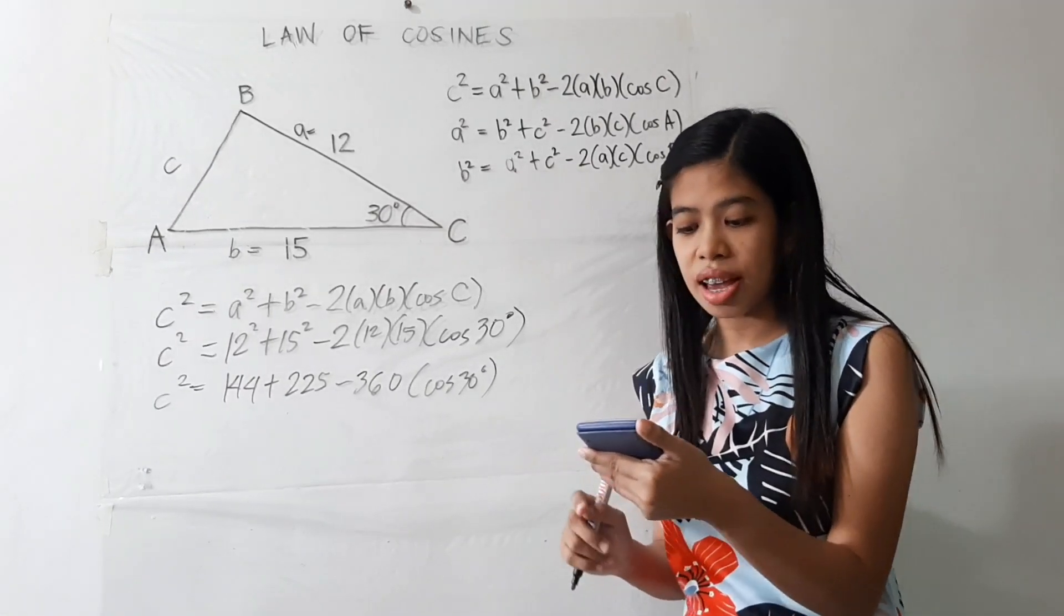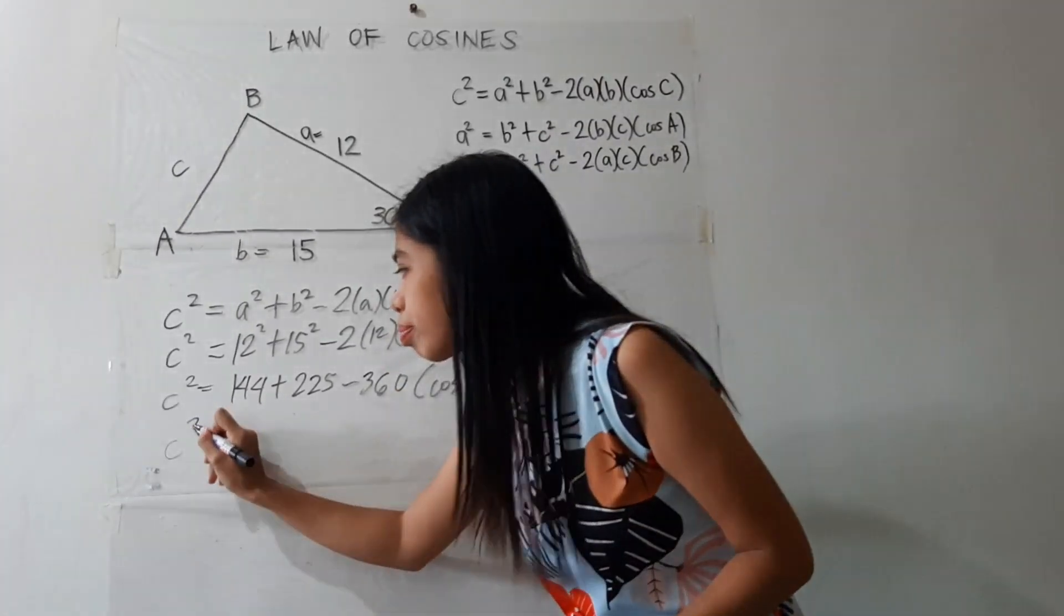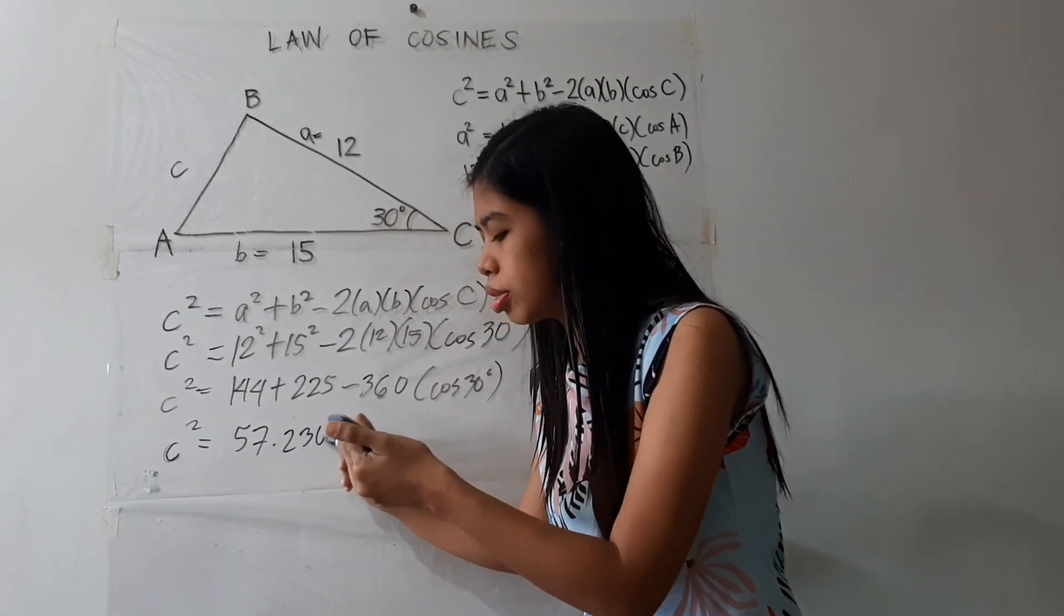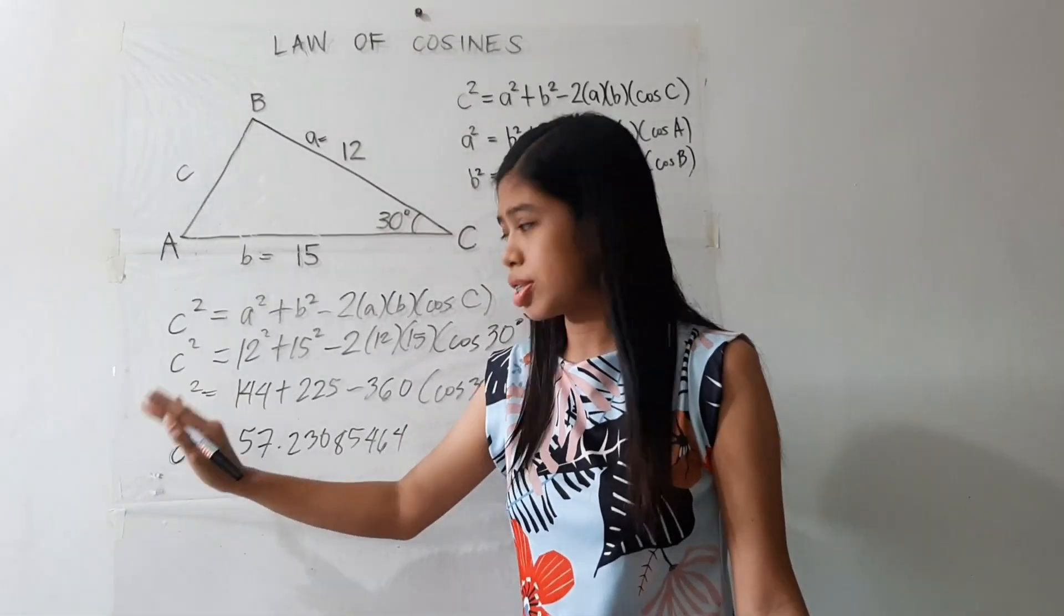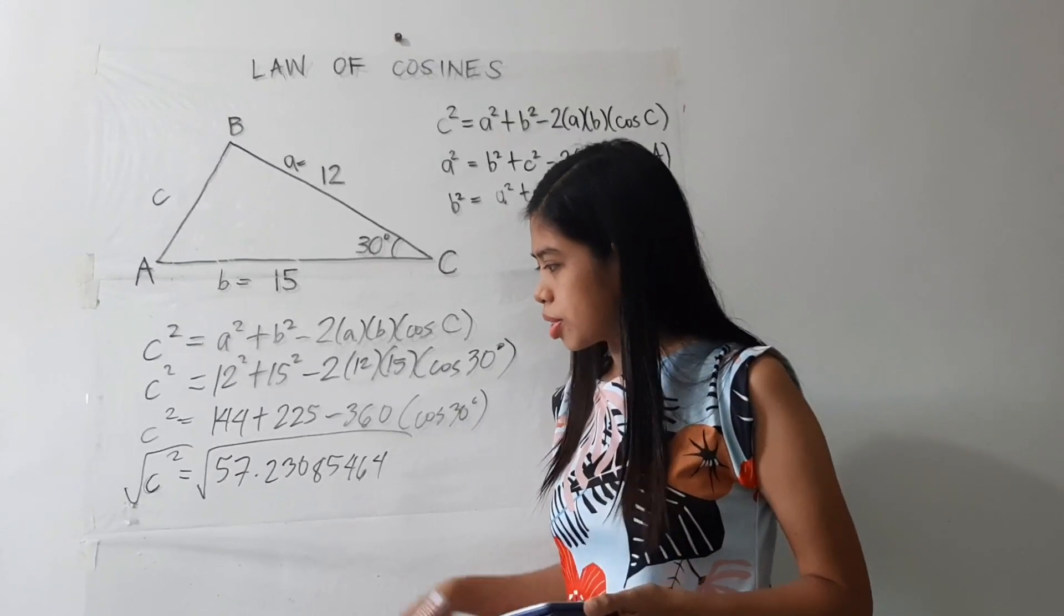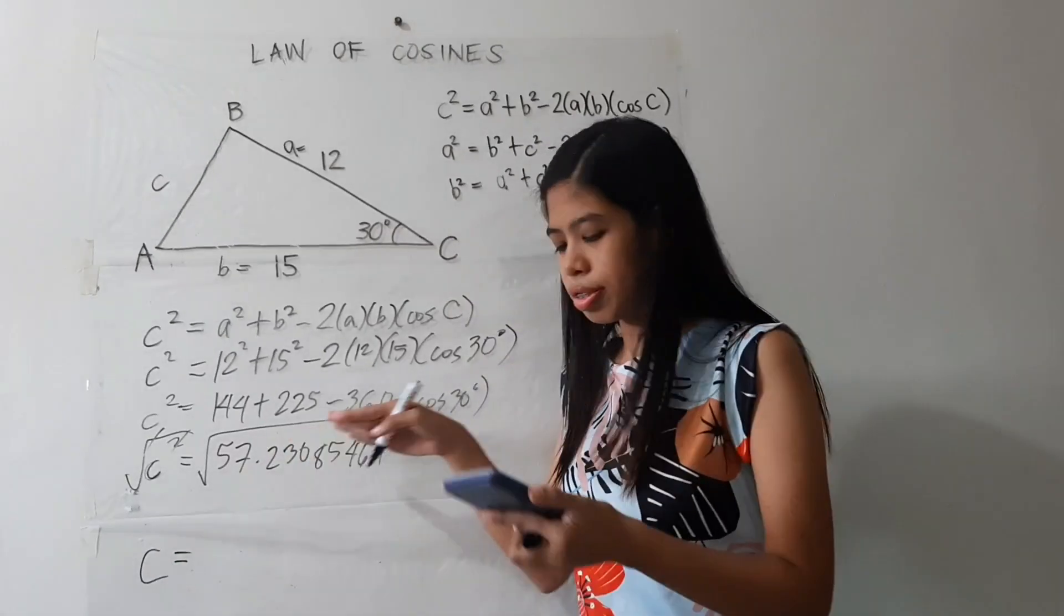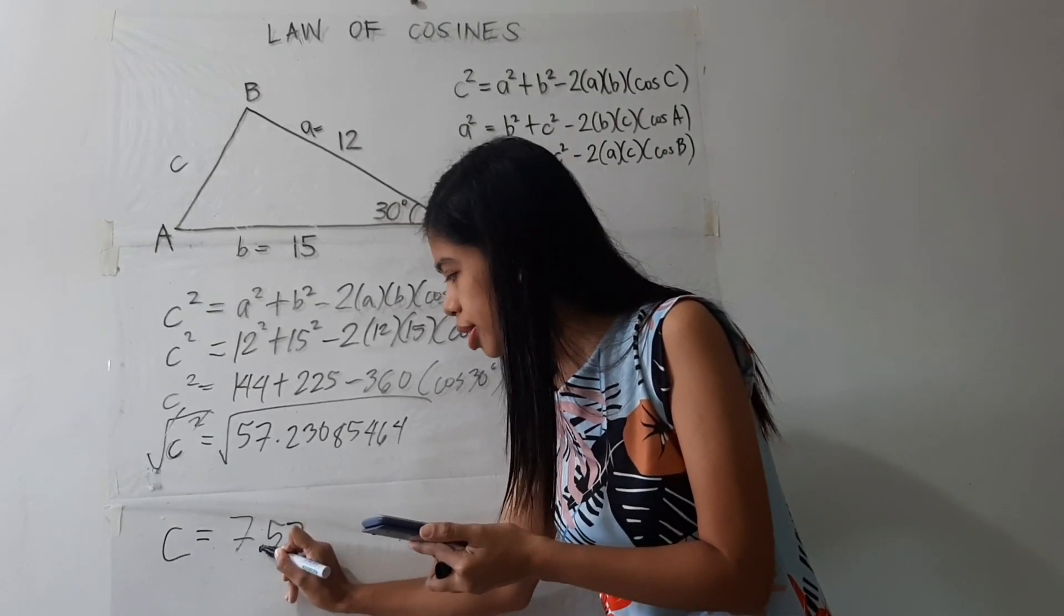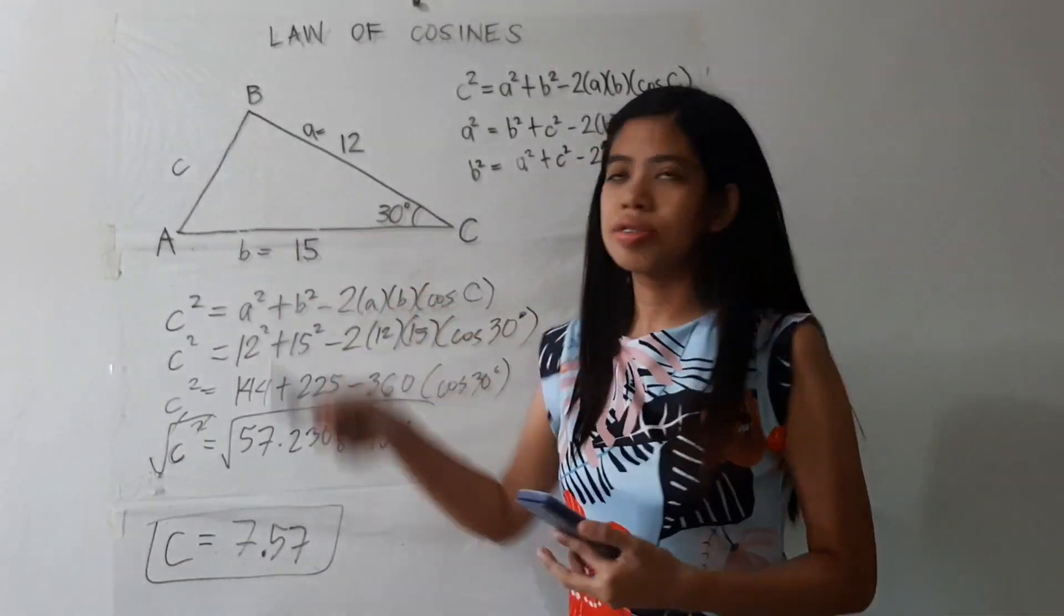And since we are looking for C and not the square of C, we may just extract the square root of both sides. Alright, so since we extracted the square root of both sides, we only have here side C and the answer would be 7.57 units since we rounded off to the nearest hundredths. So that's it. That is the measure of side C.